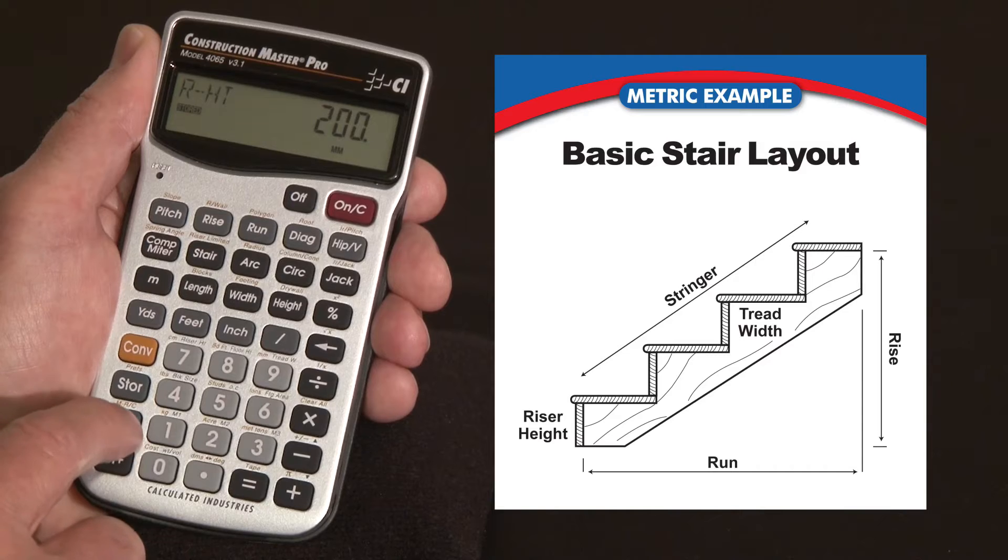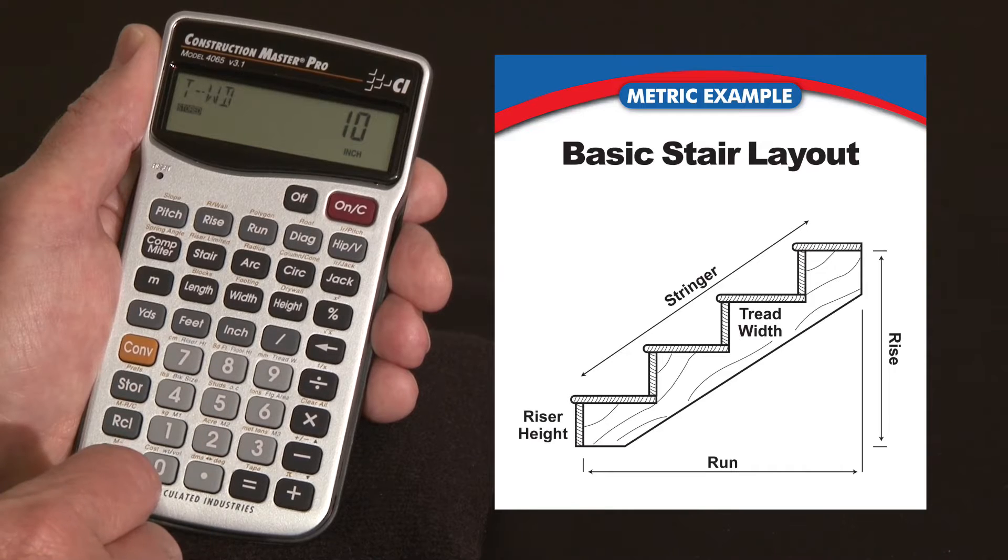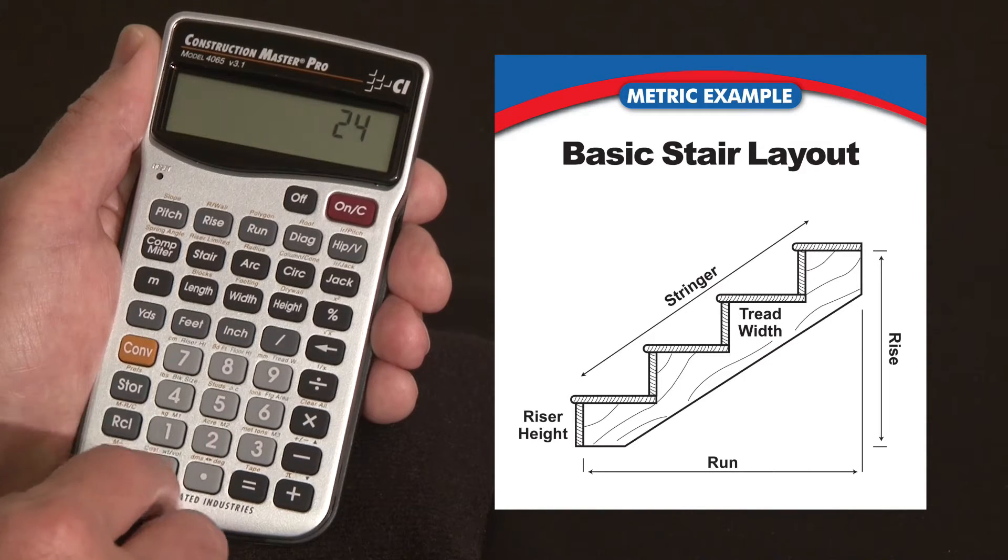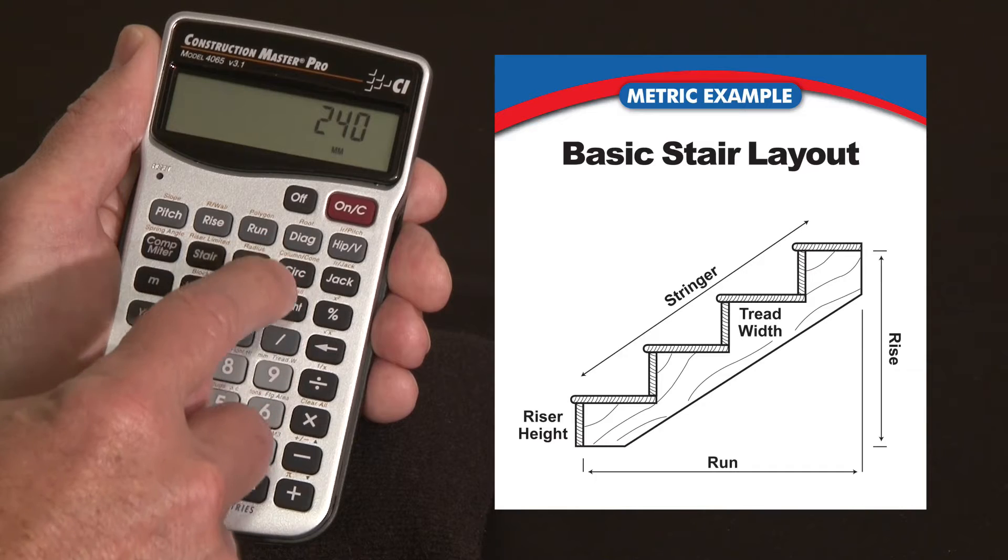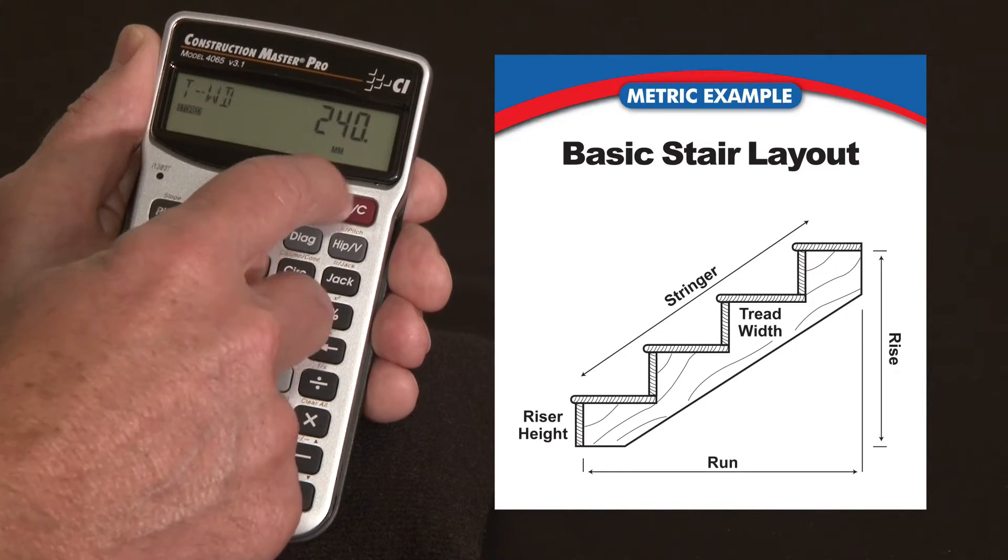The same thing over the 9 key I have my tread width stored. So right now the default is 10 inches, but for a metric application let's use 240mm as our target. Hit convert 9, makes it millimeters, and I say store that in the 9. Tread width stored 240mm.